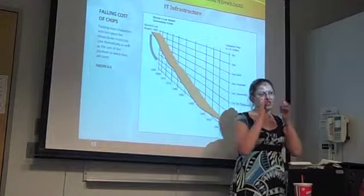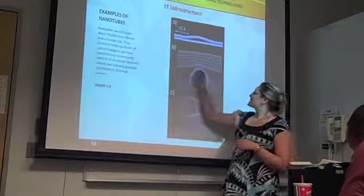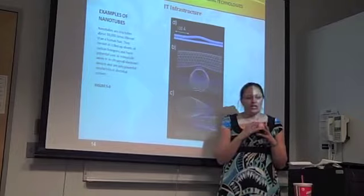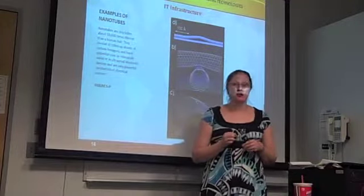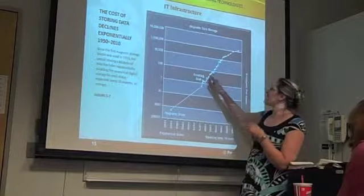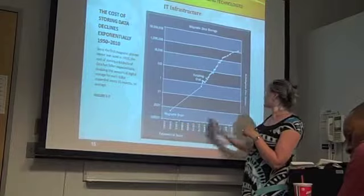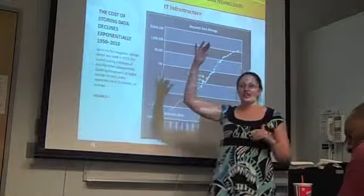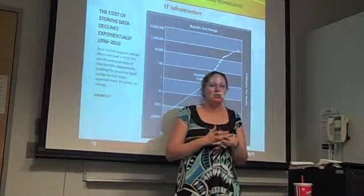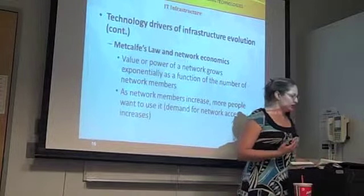This also looks at the different scales of nanotechnology where we're looking at transistors at an atomic level — they're so small. And looking at data storage costs, there's an exponential decline: the amount of kilobytes you can get per dollar goes up exponentially year in and year out. More storage for less money and more processing power for less money are two of the drivers that go hand-in-hand for the infrastructure changes we see.